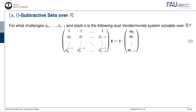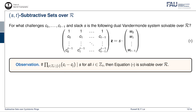You might have already observed a pattern that the knowledge extractor is always going to solve a dual-Vandermonde system of a certain dimension. Therefore, a natural question to ask is: for what challenges C0 up to C_{t-1} and slack S is the following dual-Vandermonde system solvable over the ring R? Our observation is that if for all i from 0 to T-1, the slack S is divisible by the product of C_i minus C_j for all j not equal to i, then the dual-Vandermonde system is solvable over R.